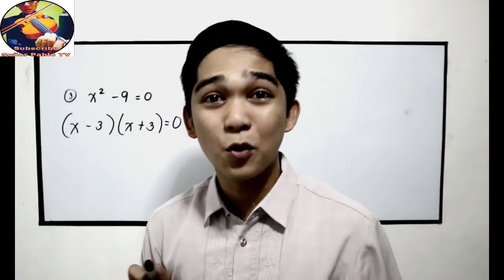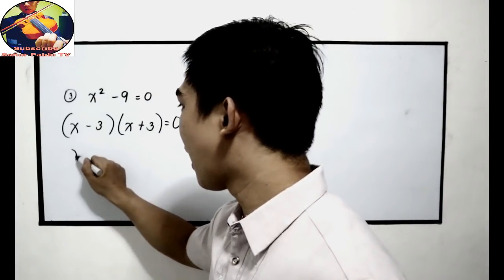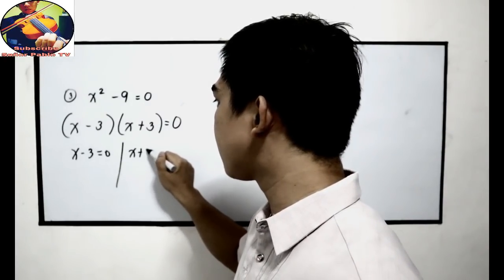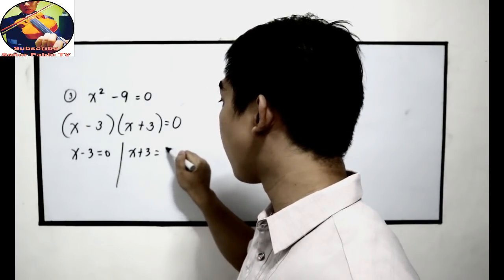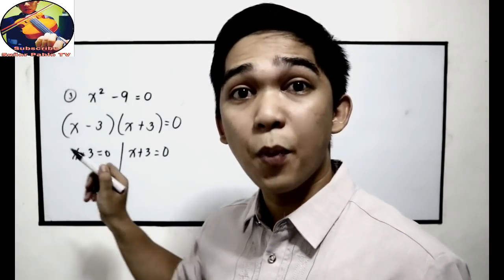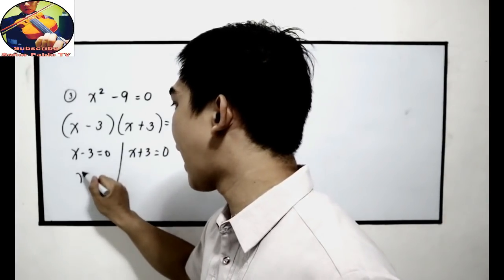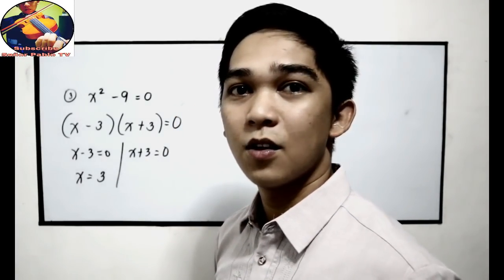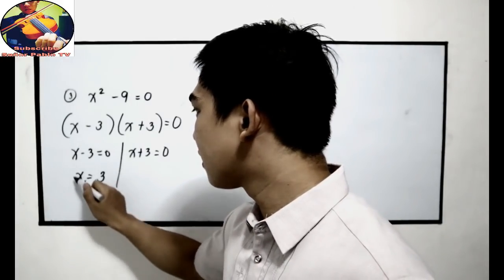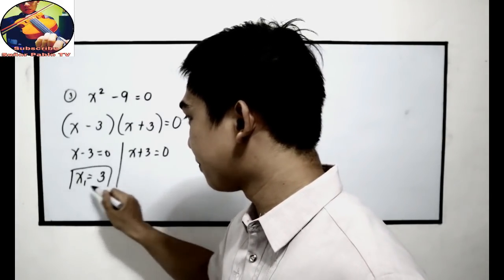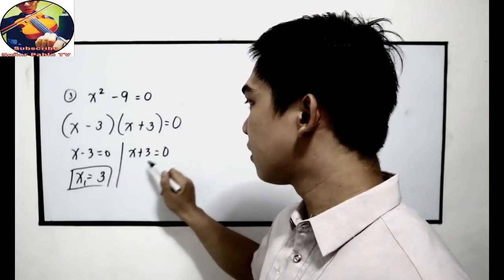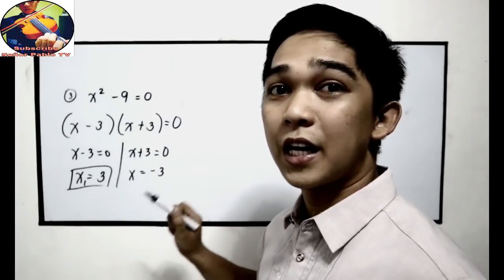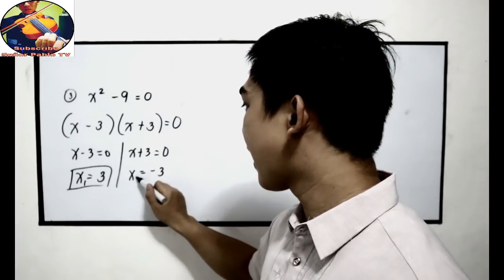Now equate to 0: x minus 3 is equal to 0, and x plus 3 is equal to 0. Transposing, x is equal to positive 3 — we can name that x sub 1. And the other one is x is equal to negative 3 — we can name that x sub 2.